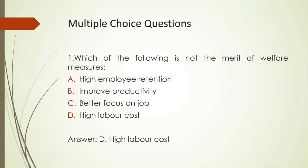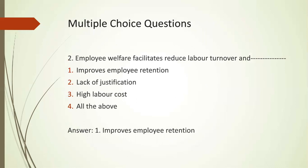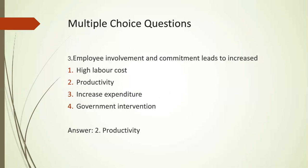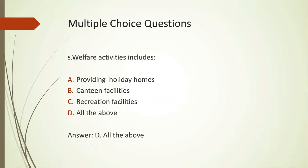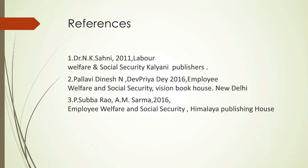A few review questions: Which of the following is not a merit of welfare measures? High labor cost — it is a demerit, not a merit. Employee welfare facilities reduce labor turnover and improve employee retention in the organization. Employee involvement and commitment lead to increased productivity. One of the demerits of employee welfare is high labor cost. Some of the welfare activities include providing holiday home, canteen facility, and recreation facility. Thank you very much for giving me this opportunity. Thank you.